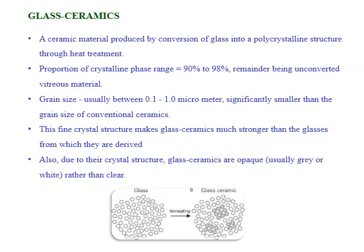Normally, the grain size of the polycrystalline phase present in the material is 0.1 to 1 micrometer, significantly smaller than the grain size of conventional ceramics. These fine crystal structures make glass ceramics much stronger than the glass from which they are derived. Due to their crystal structure, glass ceramics are opaque rather than clear. We can see some materials showing a glassy look — these are called glass ceramics, which have an open texture compared to normal glass.